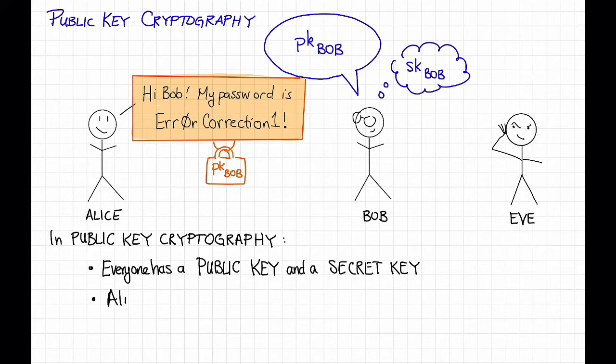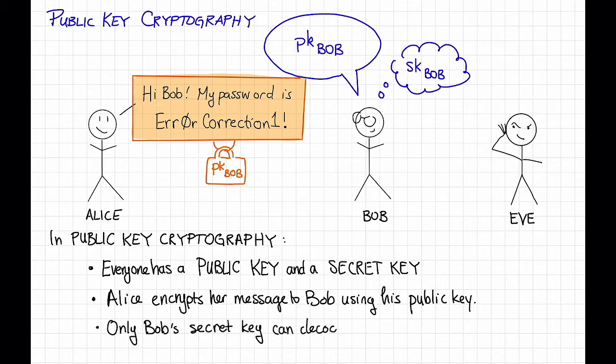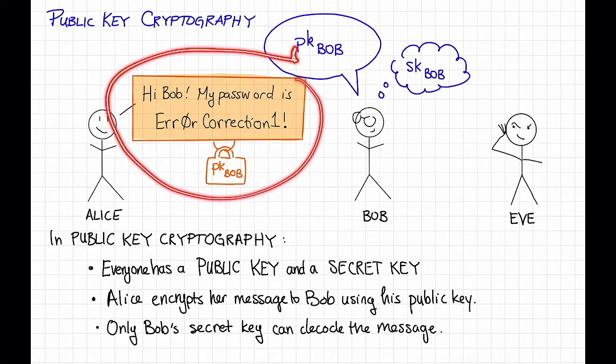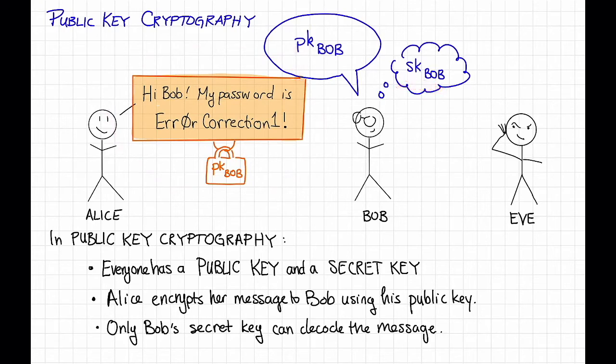So Alice encrypts her message to Bob using his public-key. However, only Bob's secret-key can decode the message. So when Bob gets this encrypted package message thing, he'll be able to use his secret-key to decode it and learn the information that Alice wanted him to have.